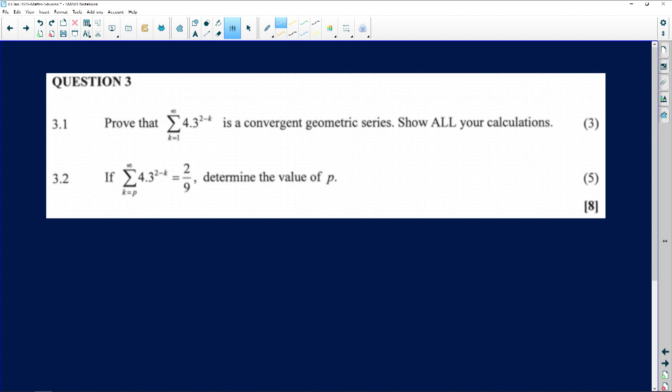What is 3.1 asking us? They say to you, prove that the sum of 4 times 3 to the power 2 minus k, where k from 1 up to infinity, is a convergent geometric series. Show all your calculations. So what is the key word in the entire question? The word convergent. What do you know about convergent? You just have to show that the ratio is a number that lies between negative 1 and 1. How do you do that? Let's start with the expansion.